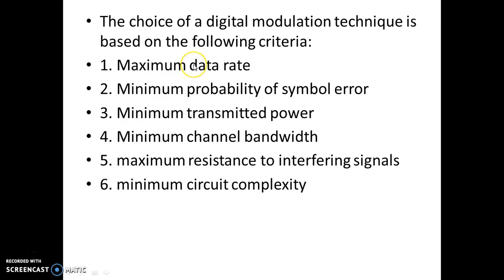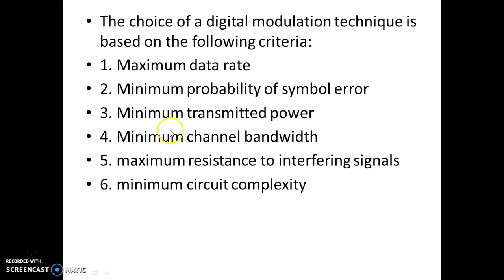We can clearly understand that we cannot satisfy all these criteria at once. If we need to increase certain things, we need to decrease certain things. For example, if we want minimum probability of symbol error, we need more power to transmit the signal. Similarly, if we want maximum resistance to interfering signals, we need more transmitted power. So, finding the right digital modulation technique is always a trade-off between these criteria.